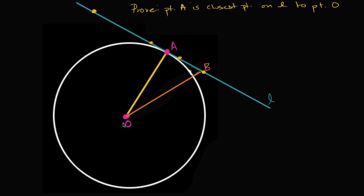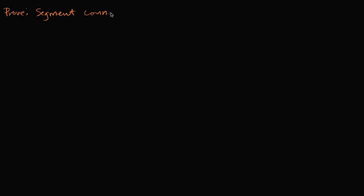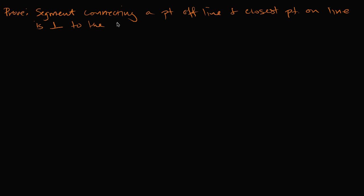Now we have to convince ourselves of a general fact: if we have a point and a line, the segment connecting that point to the closest point on the line is perpendicular to the line.